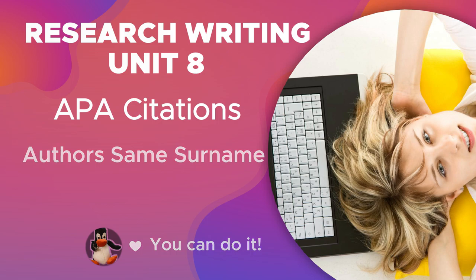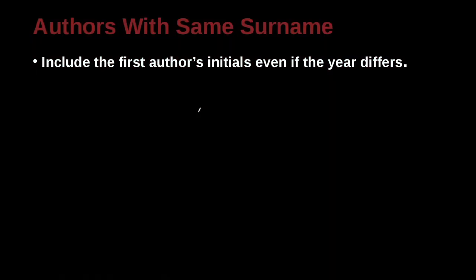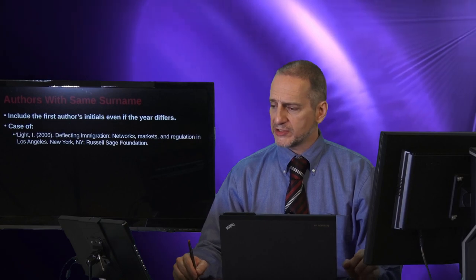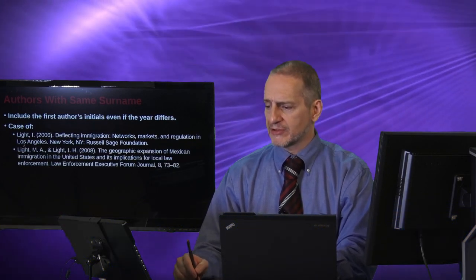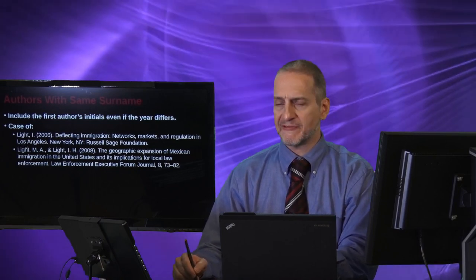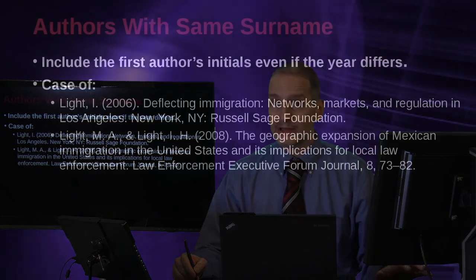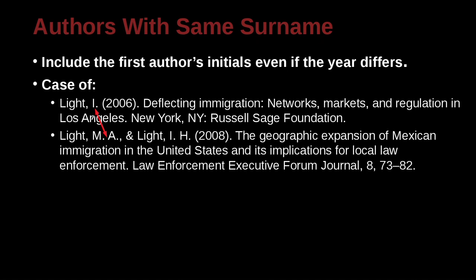What about the case when authors have the same surname, the same family name? Let's look at this example here. We have a reference for the author Light, whose first name begins with the letter I, from 2006. We also have another author, Light M.A., so this person's last name is the same, however, the first names are different. So how do we deal with this kind of case?